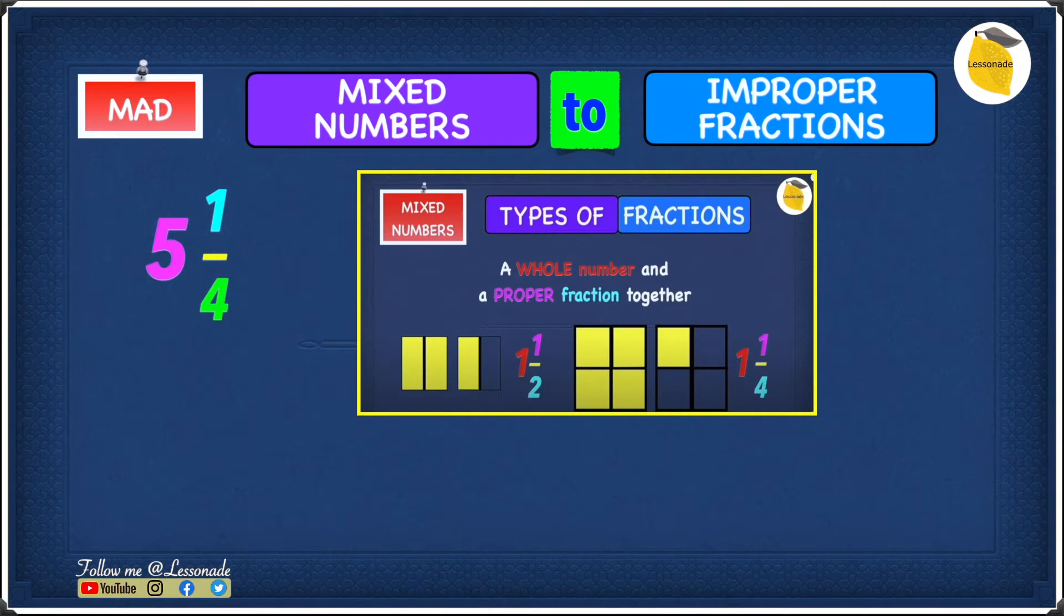And 5 and 1 over 4 is a mixed number. You'll have to convert this into an improper fraction. If you're wondering what is a mixed number, well, I've got a video on all the types of fractions, so go check that out.